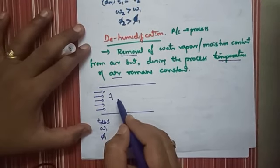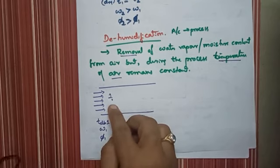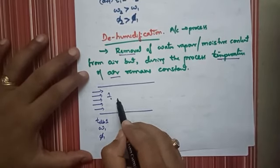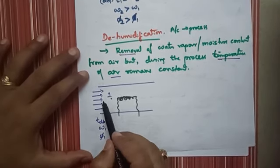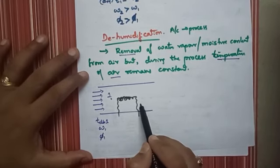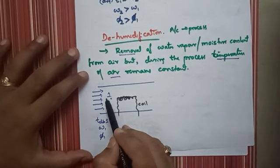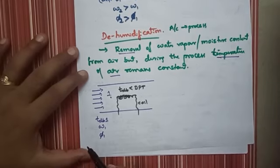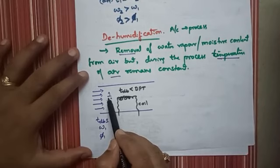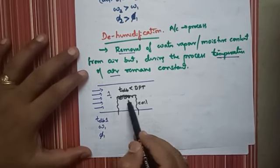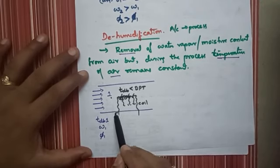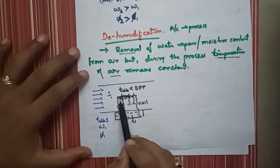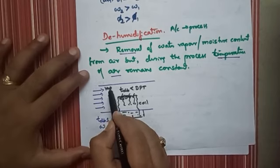To remove the water vapor, an evaporating coil is used. When air touches the surface of this coil and the dry bulb temperature of the air becomes less than the dew point temperature, the water vapor or moisture content in the air starts to condense into liquid. That liquid is collected and removed from the system.